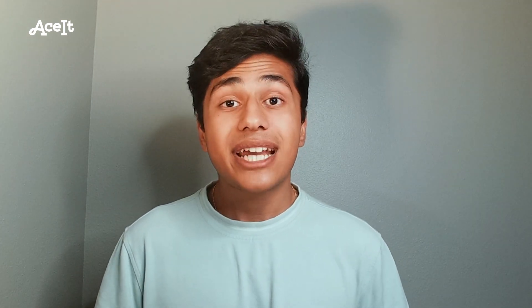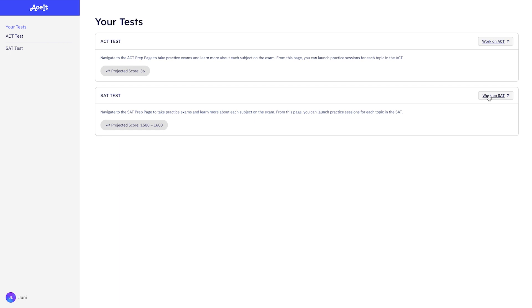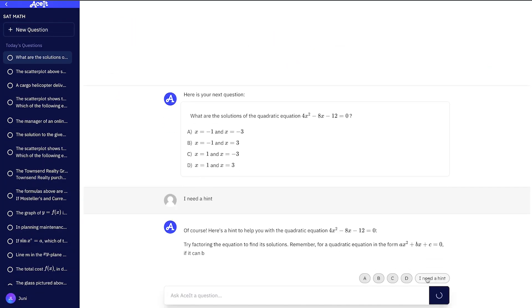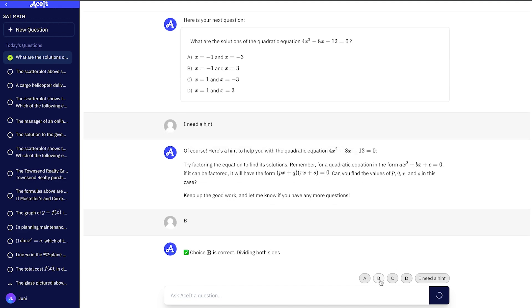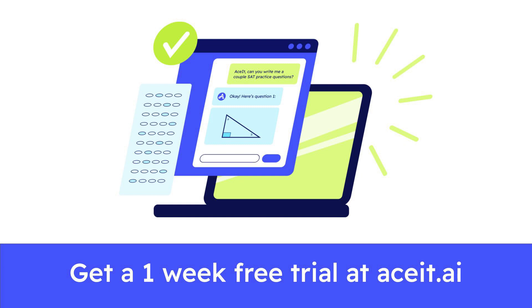For more practice problems and access to a 24-7 online study tool, check out ACE-IT at the link below. ACE-IT is the ultimate study tool for the SATs and ACTs created by Juni Learning, an award-winning educational tech company that has helped thousands of students take their learning to the next level. Get a 1-week free trial when you use the link in the description. Good luck and happy studying!